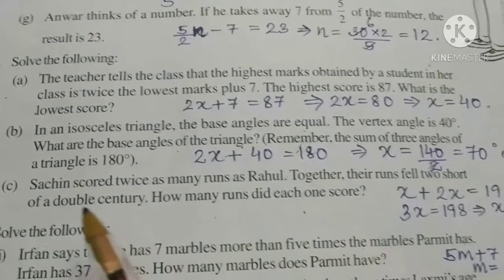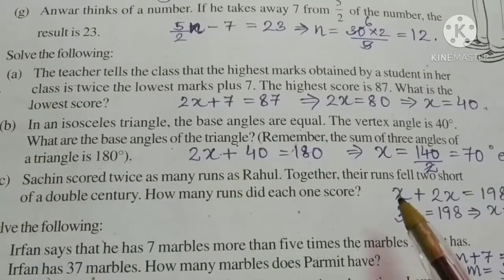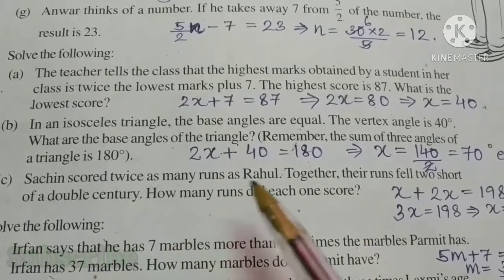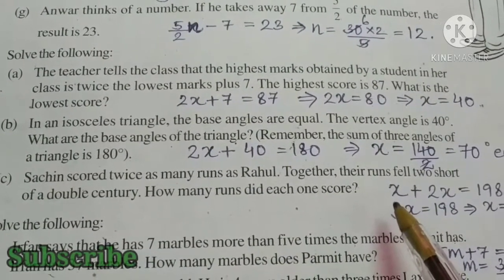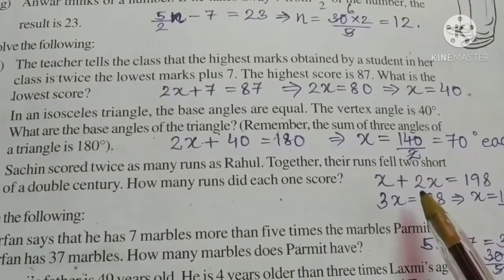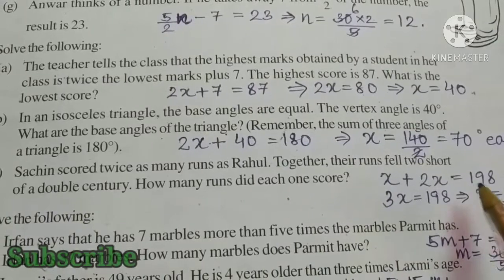Rahul's and Sachin's score we have to find. Twice as many as Rahul's. So, let us take x as Rahul's score. Sachin's 2x. Both x plus 2x is equal to 198.